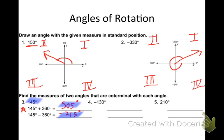For negative 130: adding 360 gives 230 degrees, and subtracting 360 gives negative 490 degrees. All three are the exact same angle. For 210 degrees: adding 360 gives 570, and subtracting 360 gives negative 150. Those are coterminal angles — the exact same angle measure.